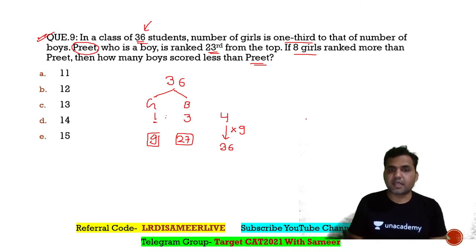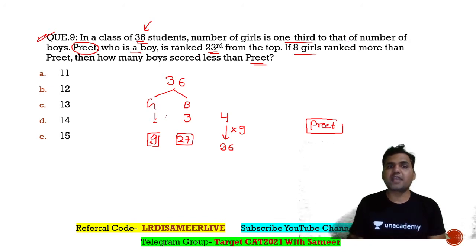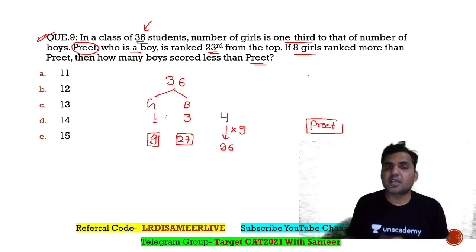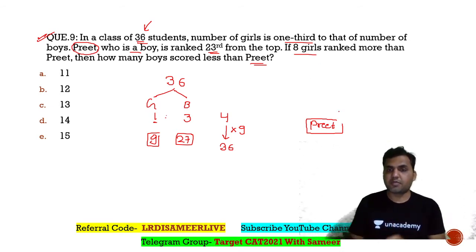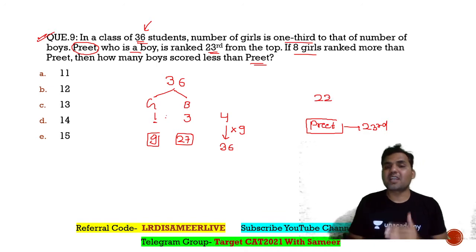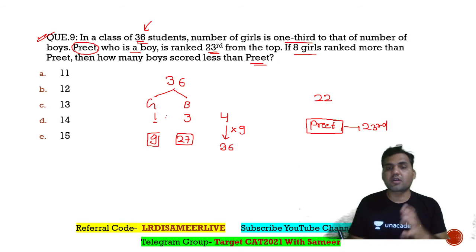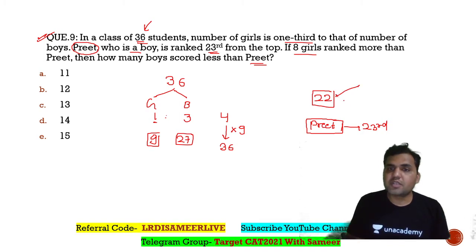Write everything down with reference to Preet. Preet is a boy ranked 23rd from the top, so there are 22 students standing in front of Preet. Eight girls are ranked higher than Preet, meaning out of those 22 students ahead of Preet, 8 are girls. Therefore, 22 minus 8 equals 14 boys are standing ahead of Preet.